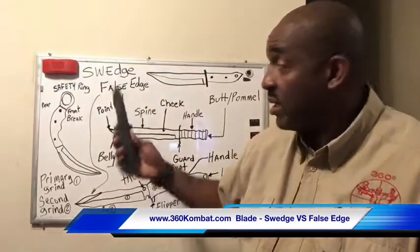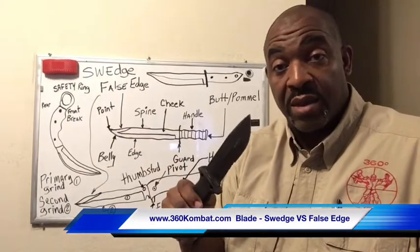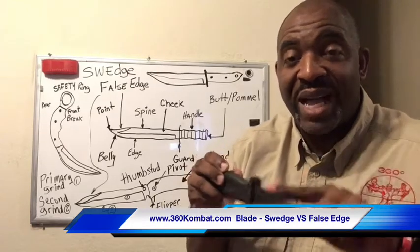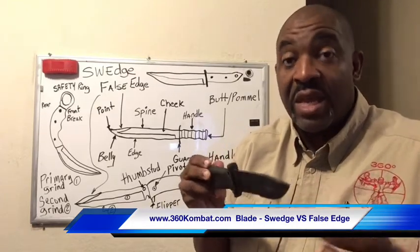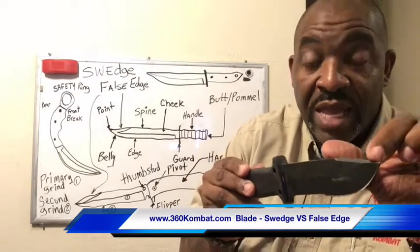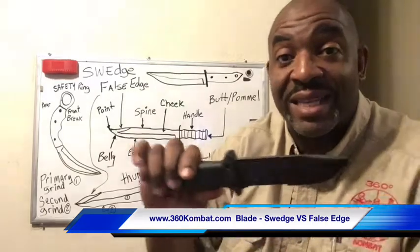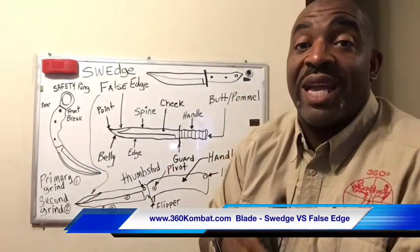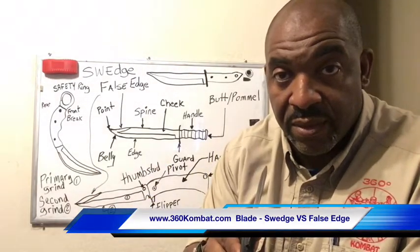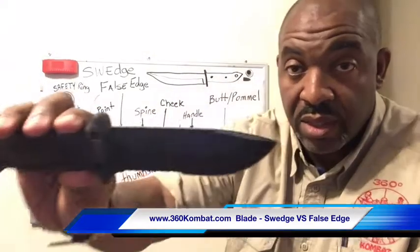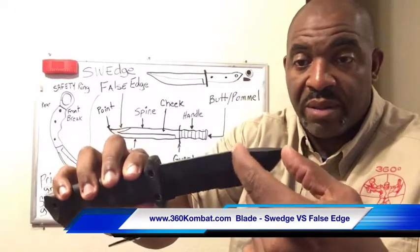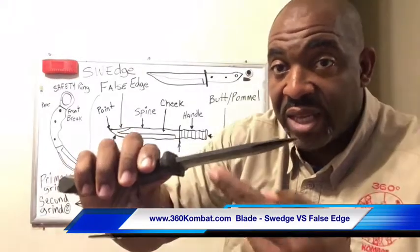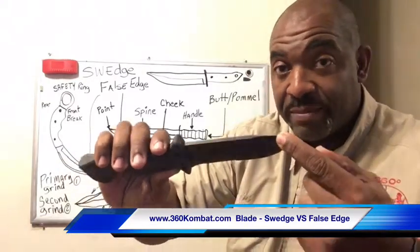We also discussed the false edge. Primary edge, false edge — the false edge can only be on the spine of the blade. It's that little section from here to here. If it went all the way down the entire back side of the spine, that would be considered a double-edge knife. So to be clear, this false edge only goes about two inches from the tip, and it's only located on the spine of the blade.